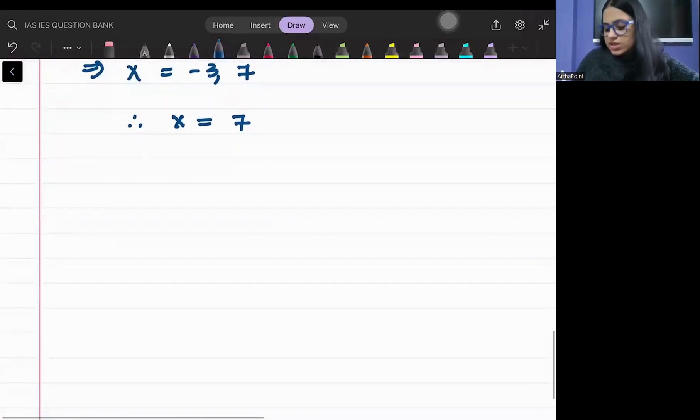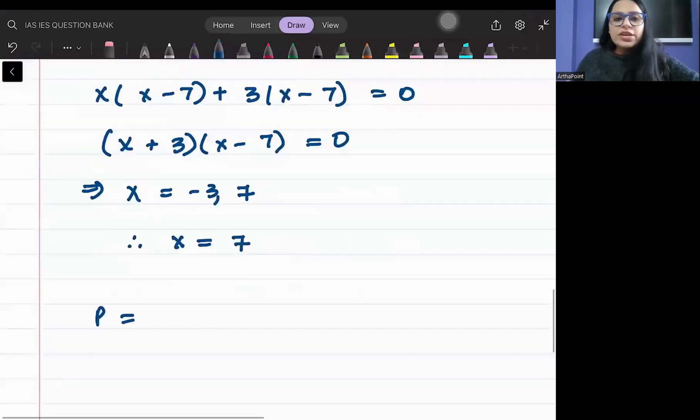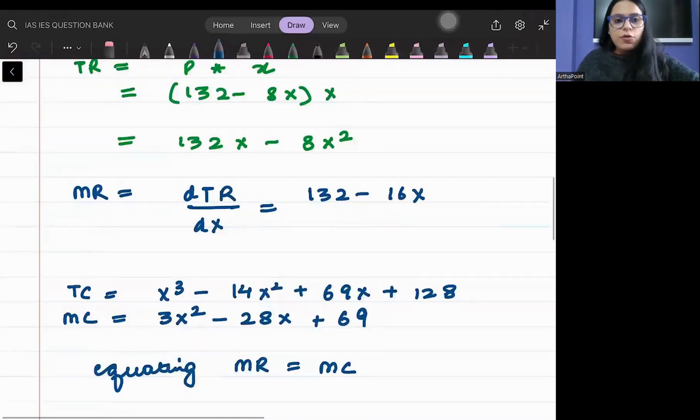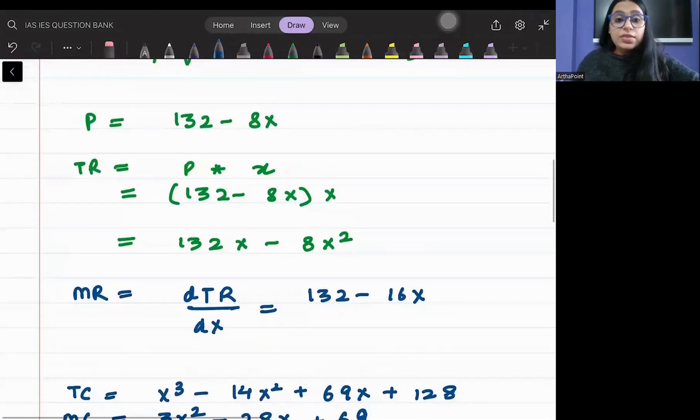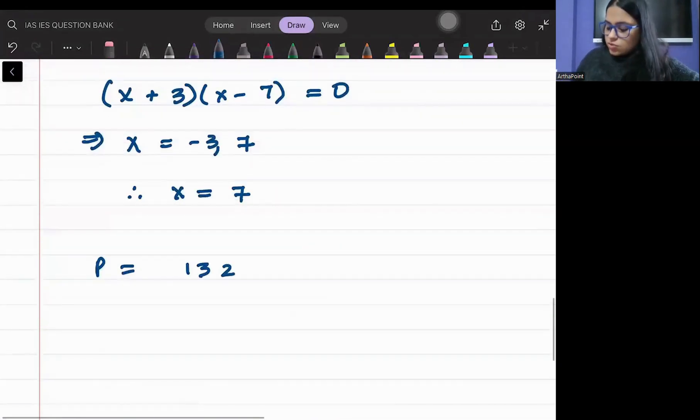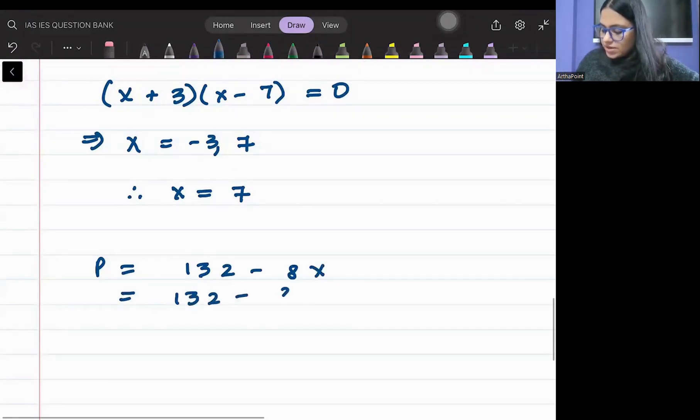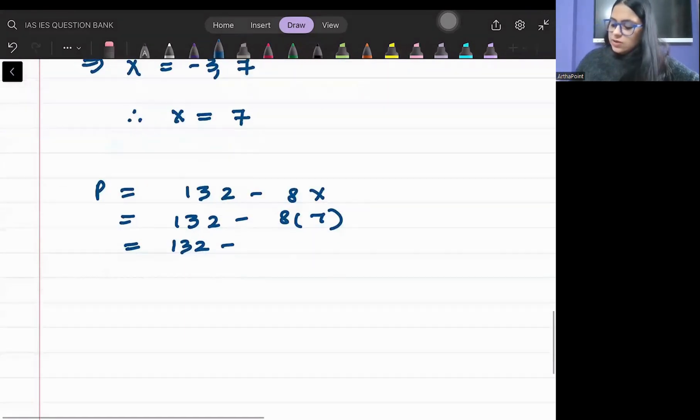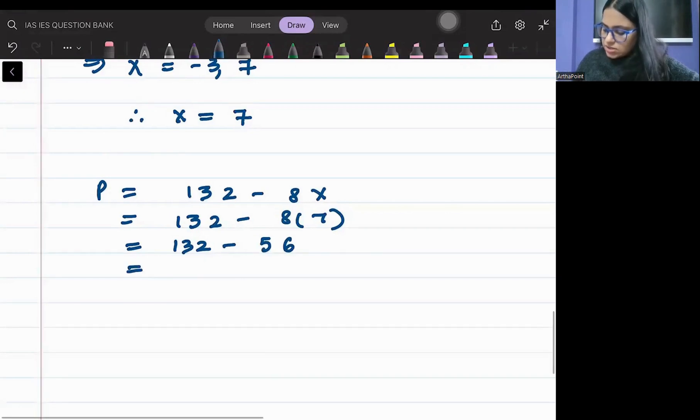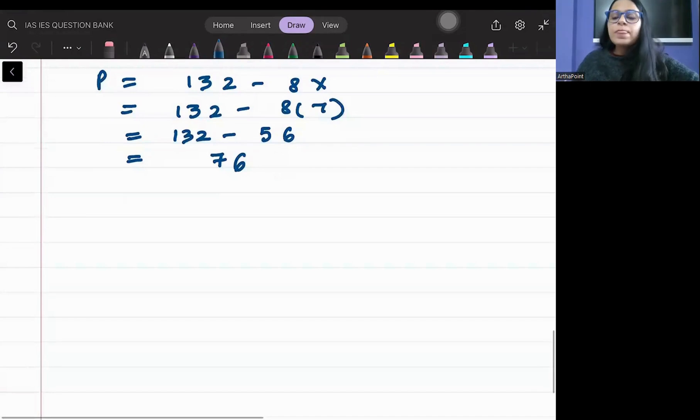But what will be the price here then? So you are given the function of price as 132 minus 8X. 132 minus 8 into 7, 132 minus 56. So that is going to be 76. Please keep looking into my calculations.